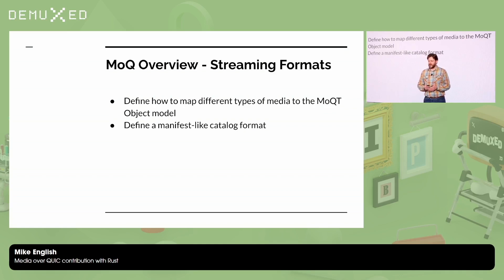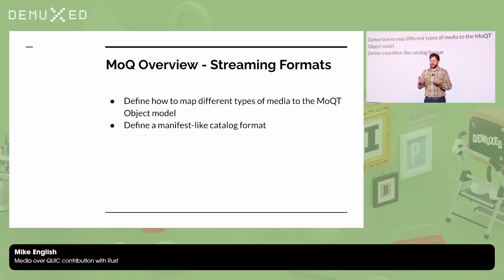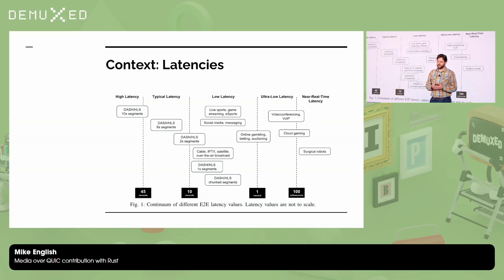On top of MoQ transport, we layer streaming formats. The streaming formats layer is where you have your mapping of what codecs you have and what tracks you have. It defines a manifest-like thing called a catalog, which gives you a way to describe your media. This layer sits on top of the MoQ transport.